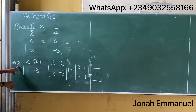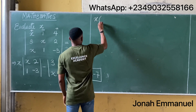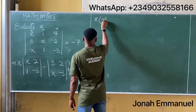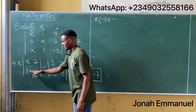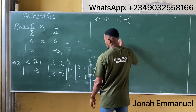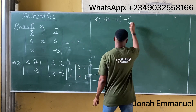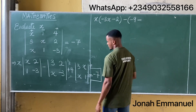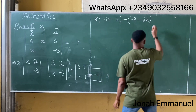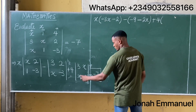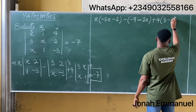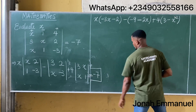Let's work this out now. This becomes x multiplied by: x times minus 3 is minus 3x, minus 2 times 1 which is 2. Next up minus: 3 times minus 3 is minus 9, minus 2 times x is 2x. Plus 4 into: 3 times 1 is 3, minus x times x which is x squared.